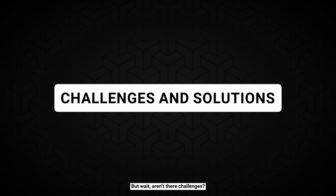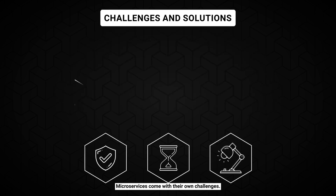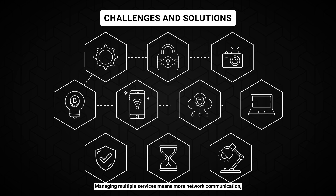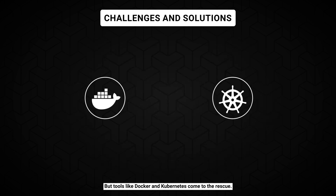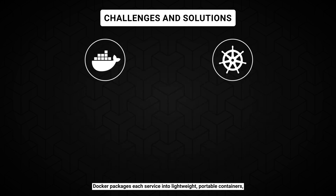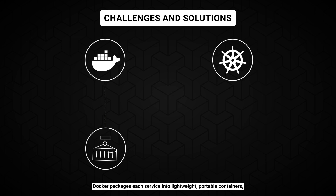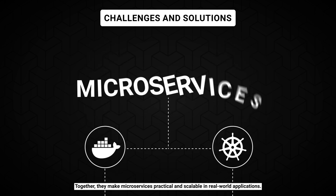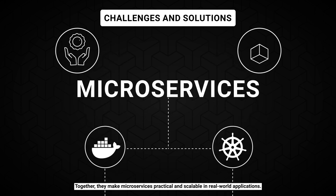But aren't there challenges? Microservices come with their own challenges. Managing multiple services means more network communication, ensuring seamless integration, and addressing security concerns. But tools like Docker and Kubernetes come to the rescue. Docker packages each service into lightweight, portable containers, while Kubernetes helps orchestrate and manage these containers efficiently. Together, they make microservices practical and scalable in real-world applications.